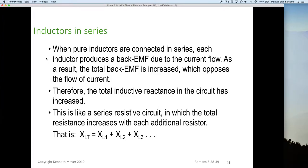Inductors in series. When pure inductors are connected in series, each inductor produces a back EMF due to the current flow. As a result, the total back EMF is increased, which opposes the current flow. Therefore, the total inductive reactance in the circuit has to increase. This is like a series resistive circuit where the total resistance in the circuit is just the addition of each of the resistors. Therefore, we can just add up the reactances. So if we have reactors in series, reactance total equals reactance one plus reactance two plus reactance three.